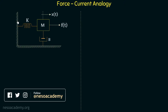Let's consider the same mechanical system discussed in the previous lecture, in which we have a mass M connected with a spring from one side, and the spring is connected with a fixed support from the other side. There is friction between the mass M and the fixed support, represented by a dashpot with a coefficient of viscous friction equal to b. A force F is applied on mass M towards the right-hand side, and there is a displacement X towards the right-hand side.